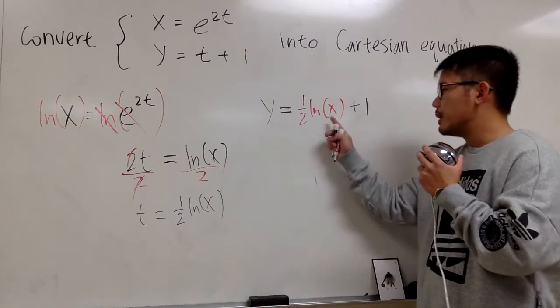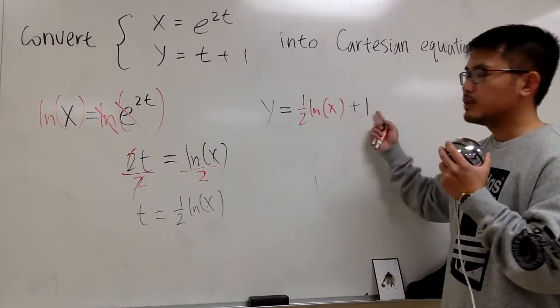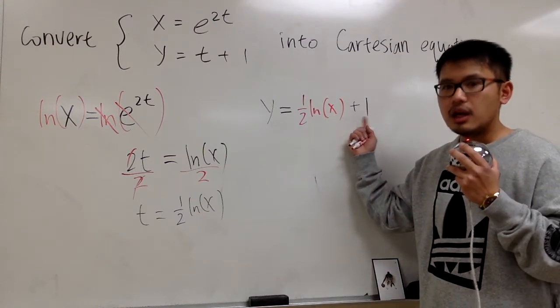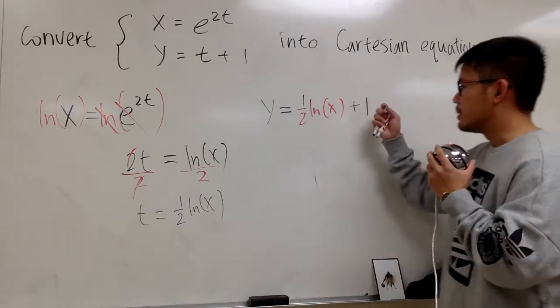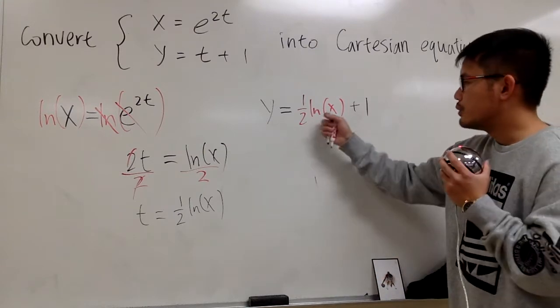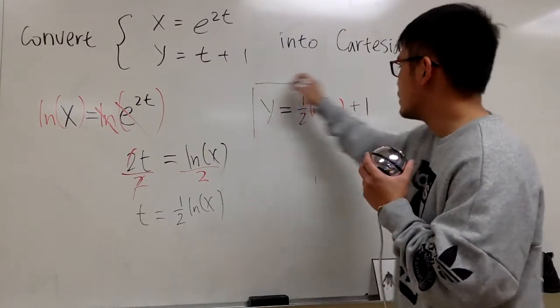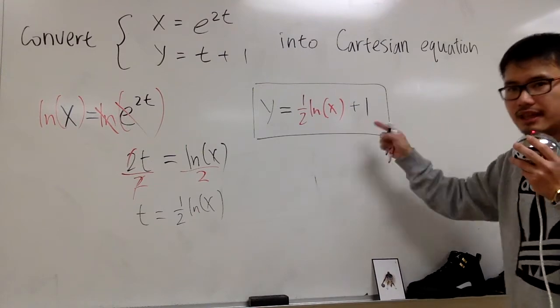And you should definitely put down these parentheses, because we have the plus 1 after that. I want to make sure that the x is the only thing inside of the ln, the plus 1 is on the outside. Use the parentheses to make this expression clear. And that is it.